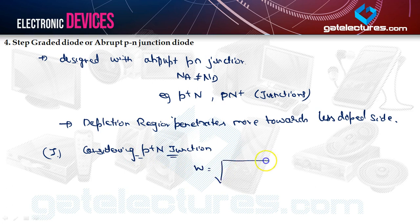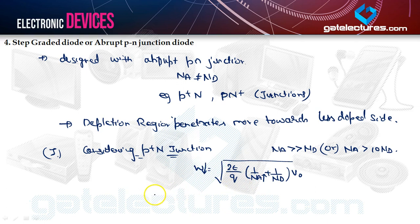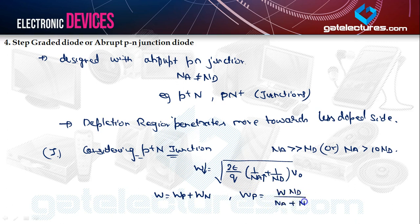Considering a P+N junction with no external voltage — no biasing applied, the diode in equilibrium — the equation for width of the depletion region applies. For P+N junction, NA is far greater than ND (or NA > 10×ND). If NA increases, width of the depletion region decreases. We know W = WP + WN, and WP = W × ND / (NA + ND). If NA increases, WP decreases, implying WP is less than WN.